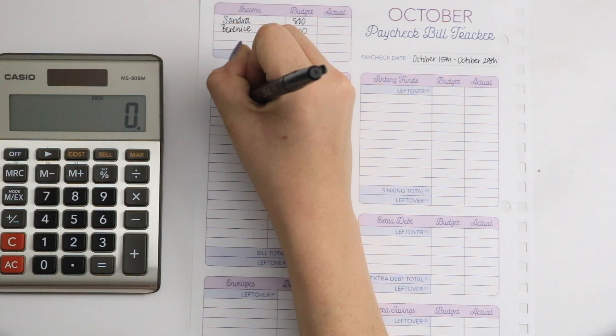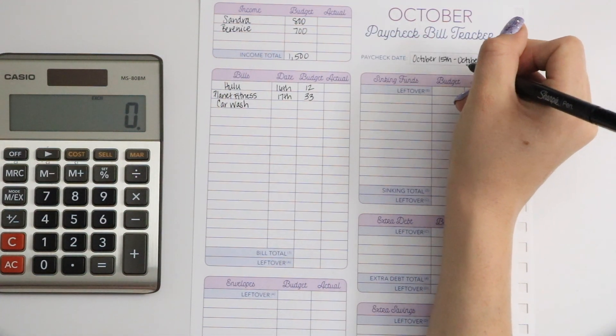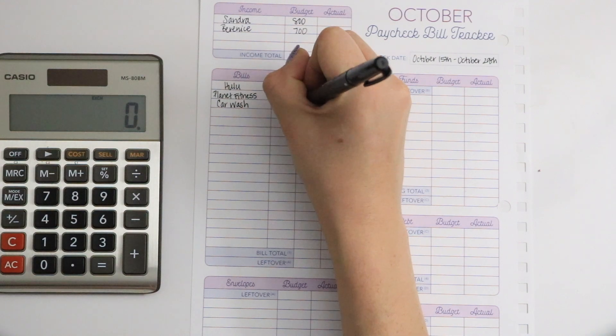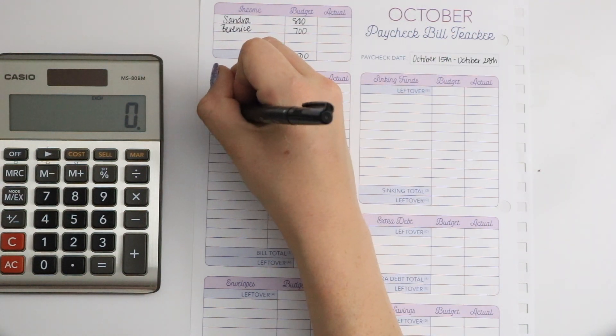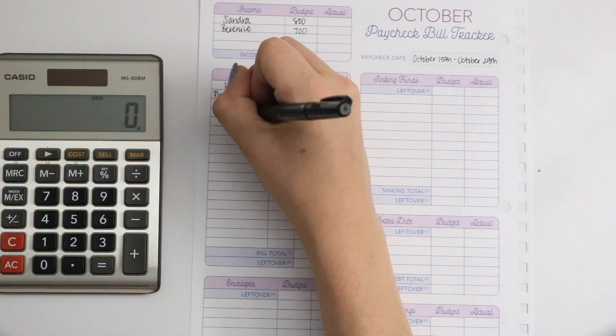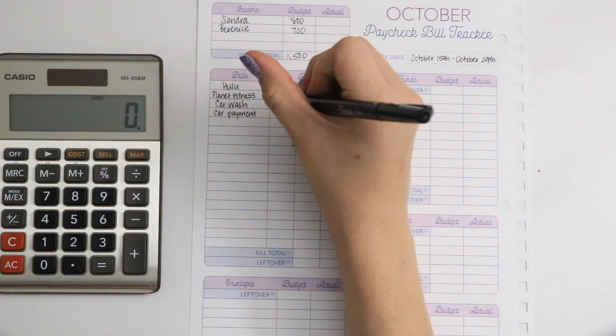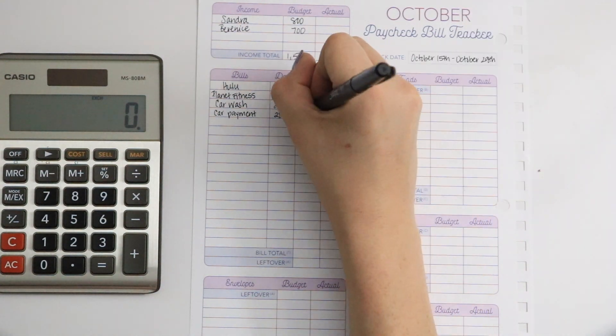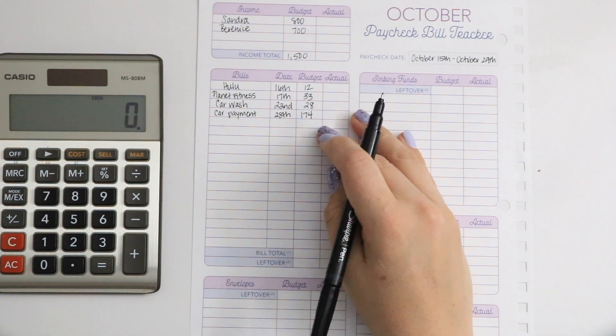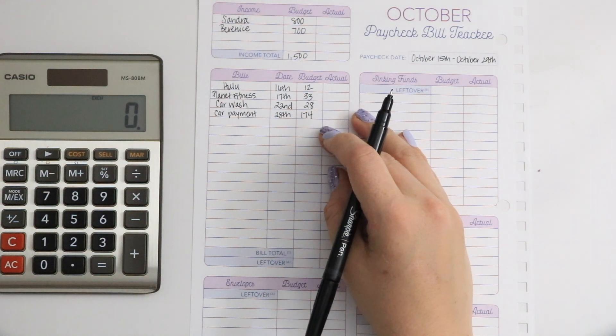Next is our monthly car wash fee that is due the 22nd and we're doing $28. And the last bill that we have for this paycheck is our car payment, which we pay the 28th and we budget $174, which is half of our car payment.